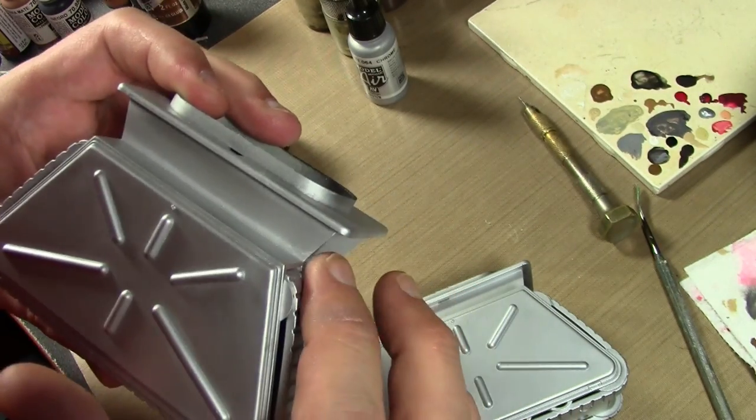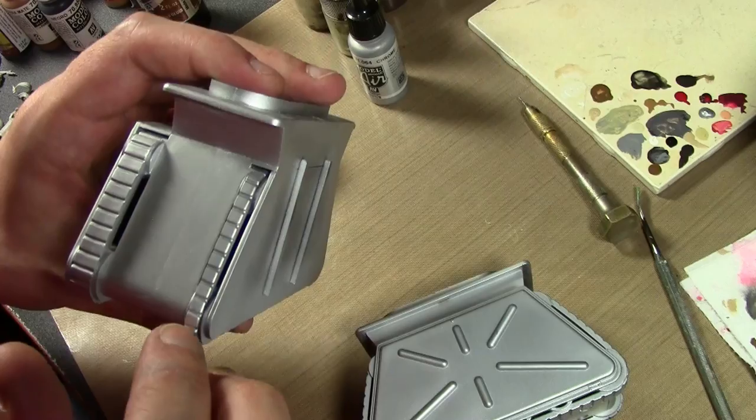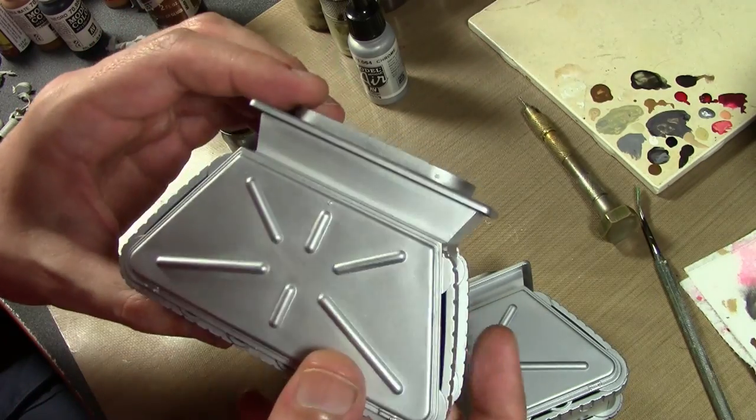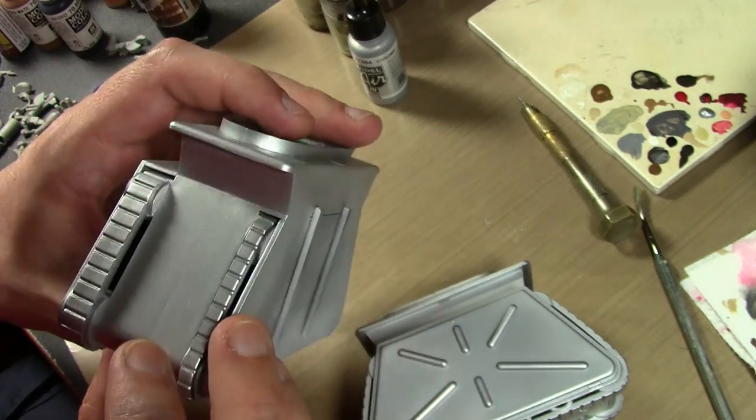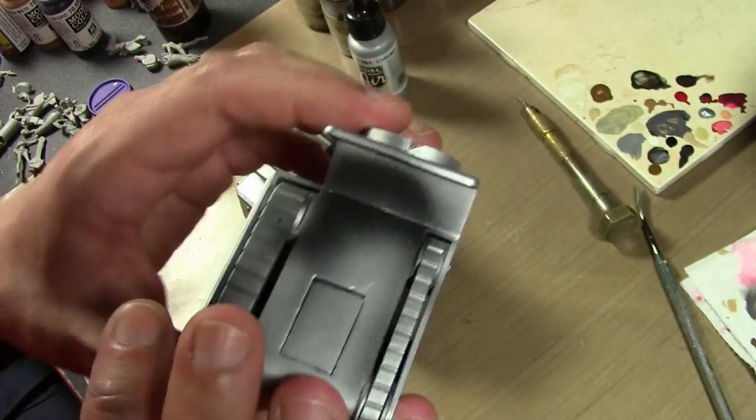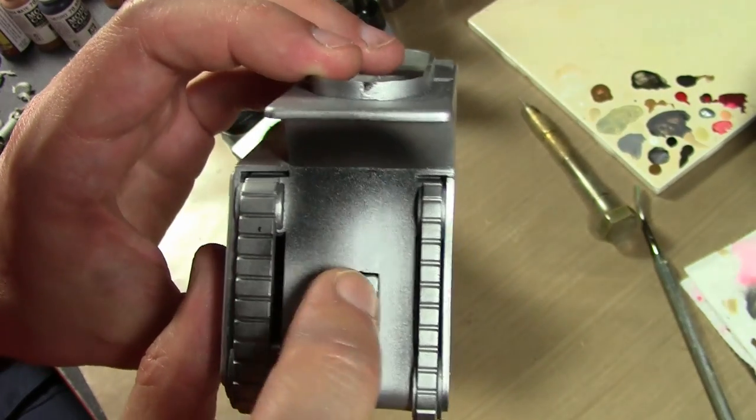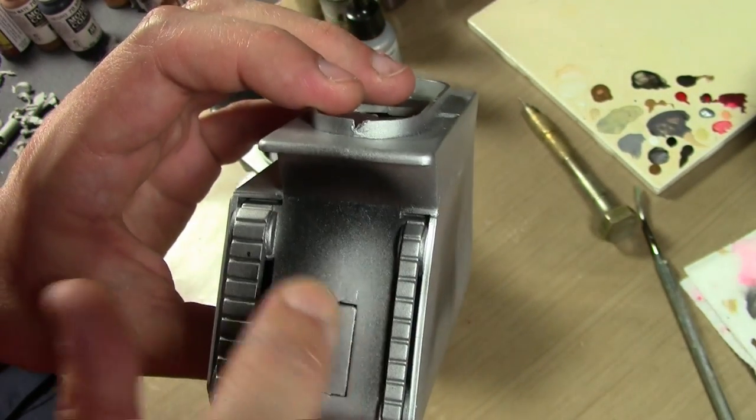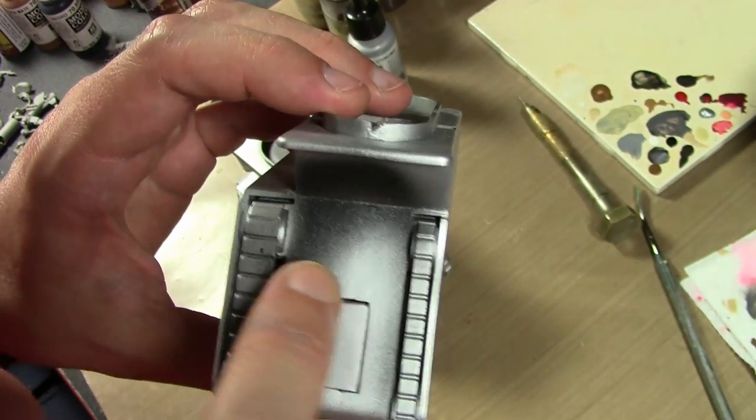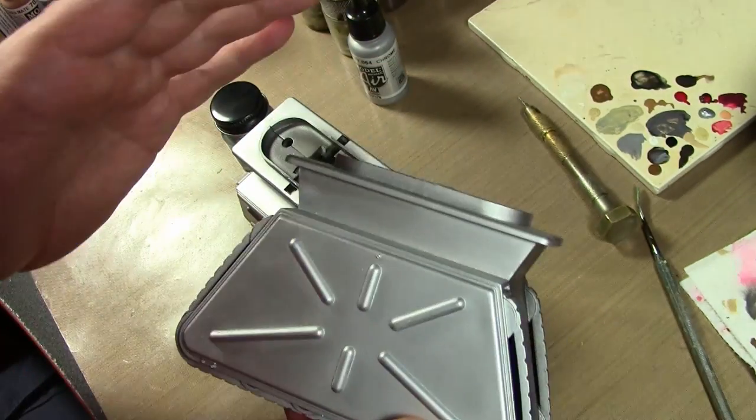I'm trying to wash off as much of the Testors that I can because even though this is non-buffing, this is a metalizer paint and it comes right off on your fingers. I don't want this underneath the paint, so I'm going to do a light sanding of this down.